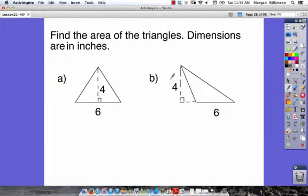We want to find the area of the triangles. Dimensions are in inches. In problem A, our base is 6 and our height, straight up and down, is 4. So it's 6 times 4.